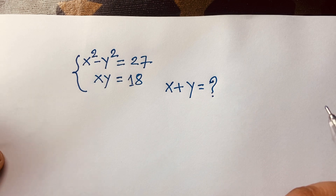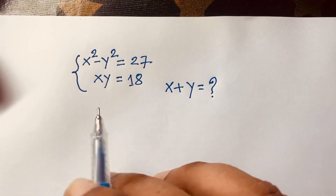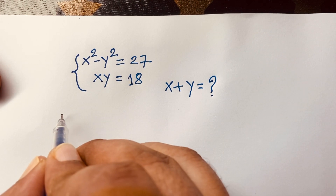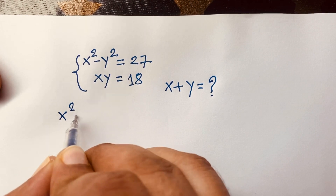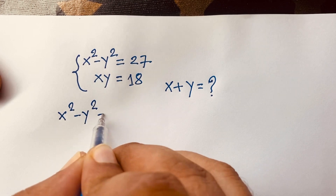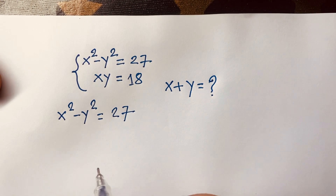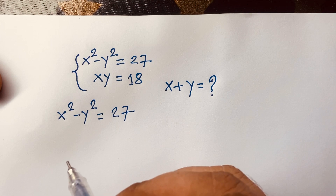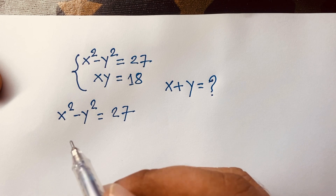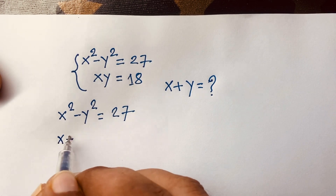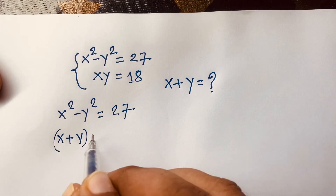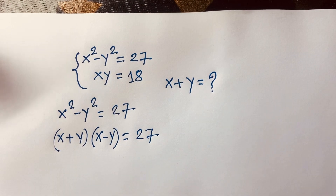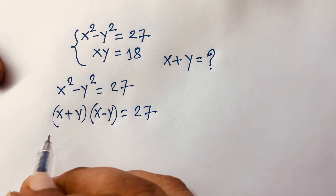How to solve this Math Olympiad question. Our first equation is x squared minus y squared is equal to 27. We know that a squared minus b squared equals a plus b times a minus b. According to this, I can say here it is x plus y times x minus y is equal to 27.